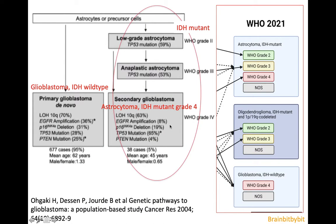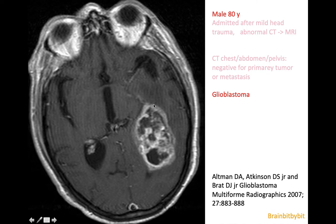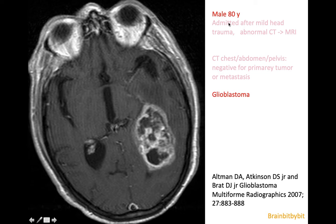The two tumors we're going to talk about were previously called primary glioblastoma and secondary glioblastoma. A primary glioblastoma is typically a necrotic tumor with irregular rim enhancement, and in this elderly patient, it is safe to say that this is an IDH wild-type glioblastoma — even in articles before 2009, before the discovery of IDH.